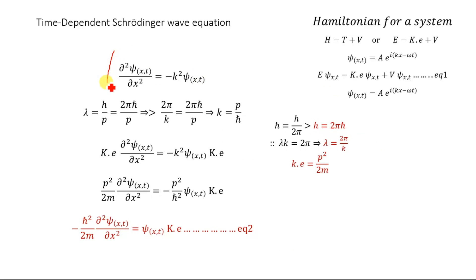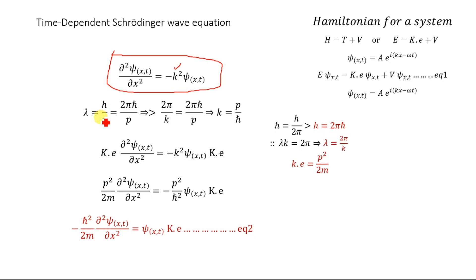Now we derive the value of k using the de Broglie hypothesis. According to de Broglie, the wavelength λ = h/p, where h is Planck's constant and p is momentum. Since h = 2πℏ (where ℏ = h/2π), we substitute to get λ = 2πℏ/p.